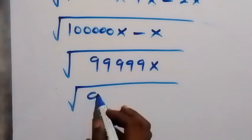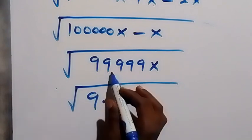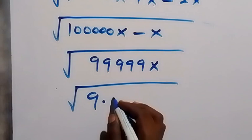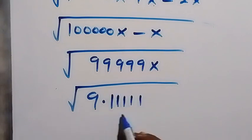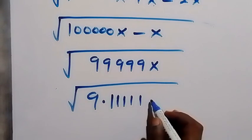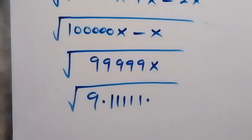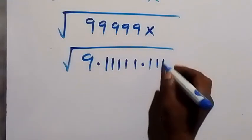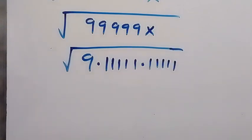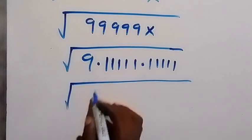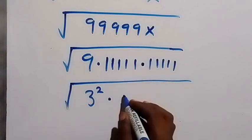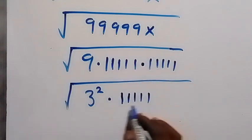We can now separate 99,999 and write it as 9 times 1 1 1 1 1 — five ones — and when we multiply, that gives us 99,999 back. So we have the square root of 9 times 1 1 1 1 1 times x, and x is itself 1 1 1 1 1 — one in five places. We can write 9 as 3 squared, and 1 1 1 1 1 times x is 1 1 1 1 1 times 1 1 1 1 1, which we write as 1 1 1 1 1 squared.